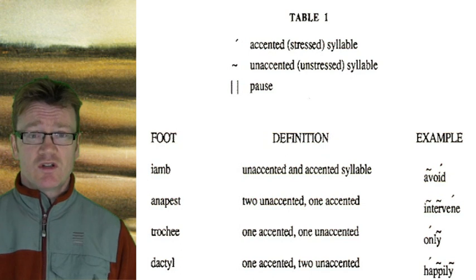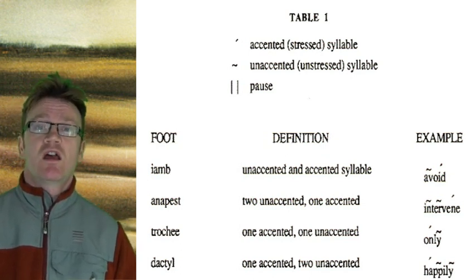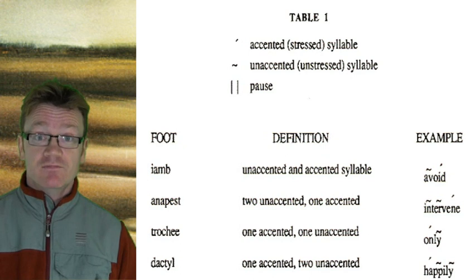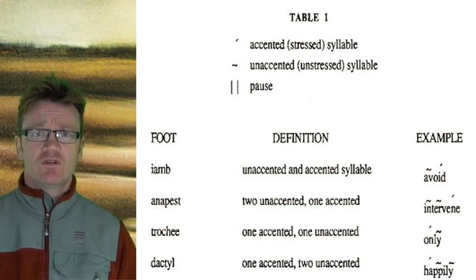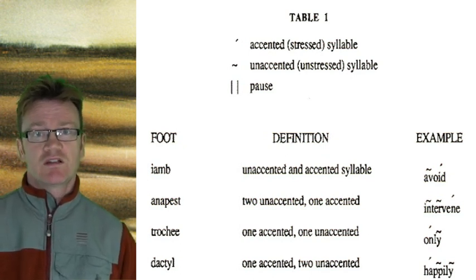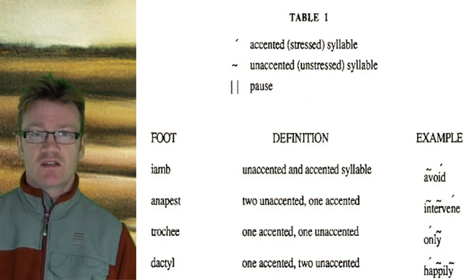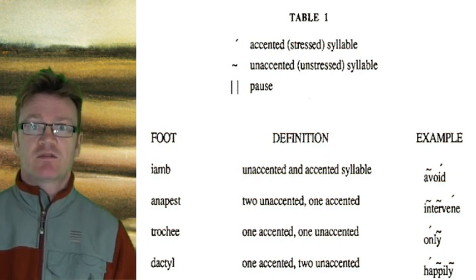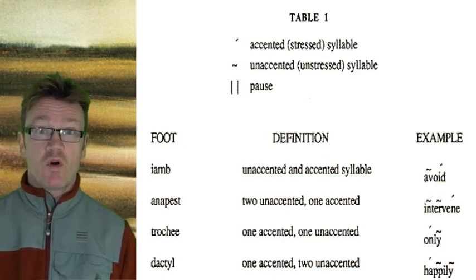And the first type is a trochee, which is dum-de. And this often creates a falling sensation, often creates a sense of irregularity, as opposed to the iamb, which sounds quite regular.